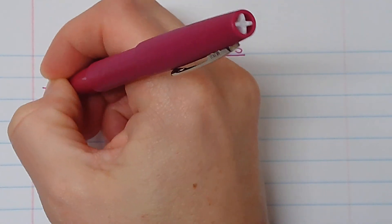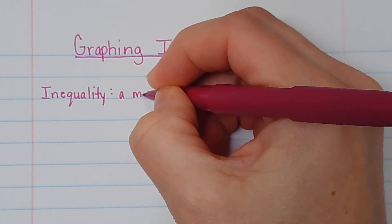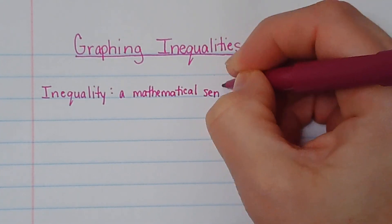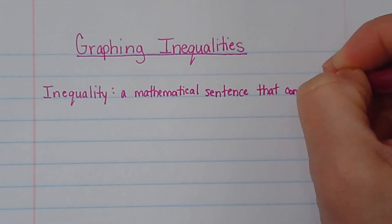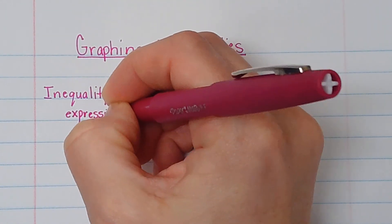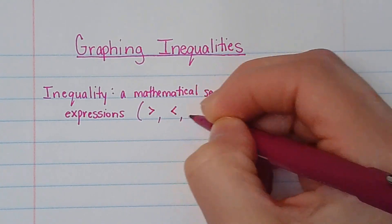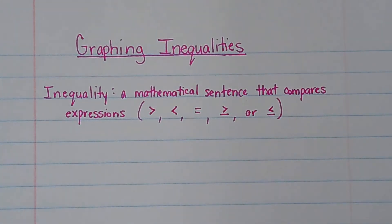Just one definition: an inequality is a mathematical sentence that compares expressions. And we'll be using the signs that you're familiar with, and then we have some new ones. Inequalities is just when you're comparing two things — you're saying one thing is bigger than the other, or one thing is less than the other.